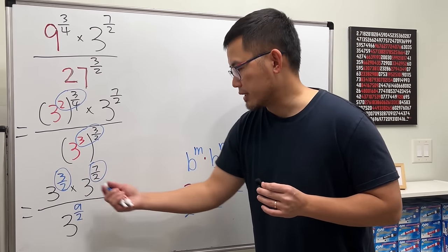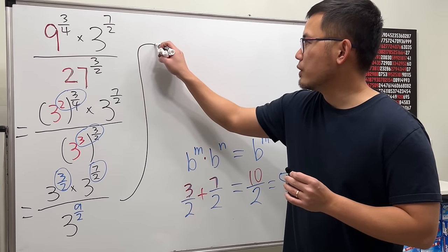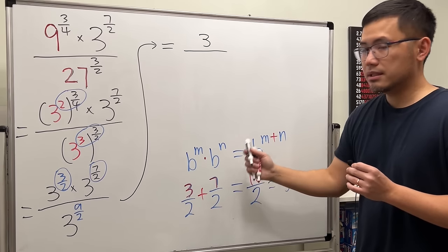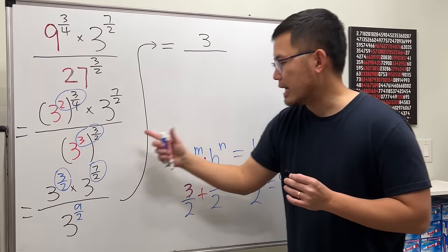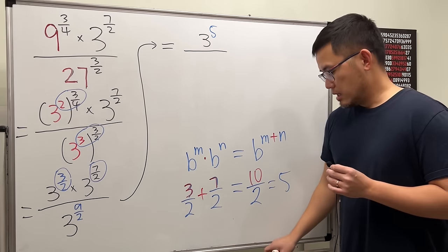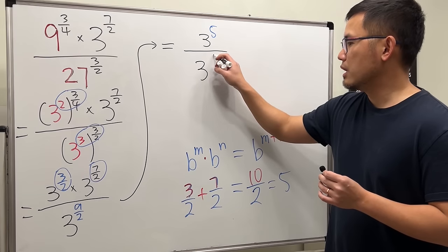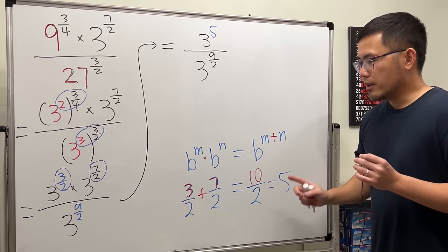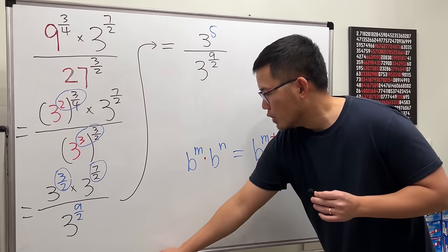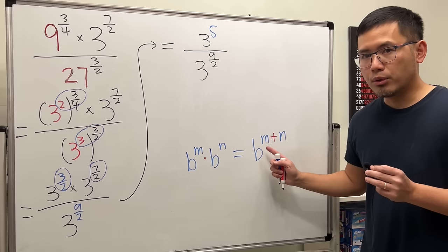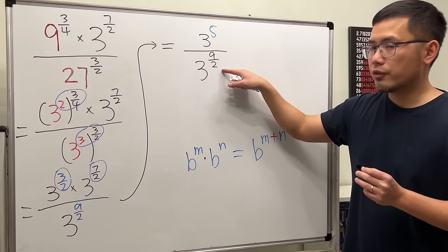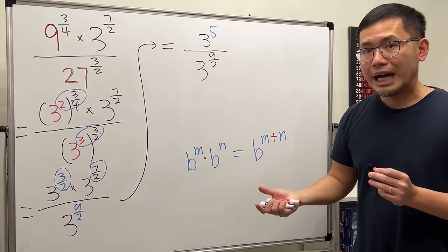So the new exponent for the top is 5. The base is still 3, and 3 over 2 plus 7 over 2 gives us 5, so we have 3 to the fifth power on top. For the bottom, we just leave it as 3 to the 9 over 2. Now for the last step: we have 3 to the fifth over 3 to the 9 over 2 — we're dividing, so we will have to subtract the exponents.